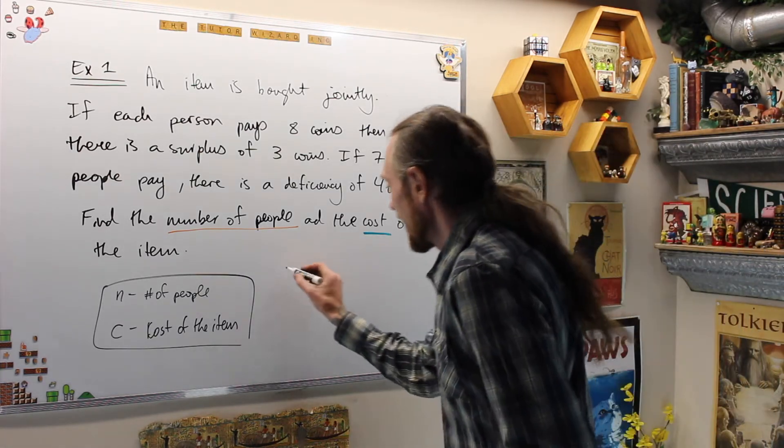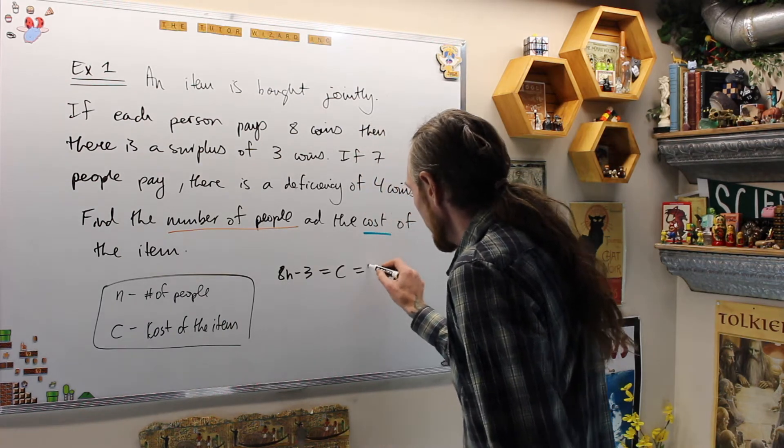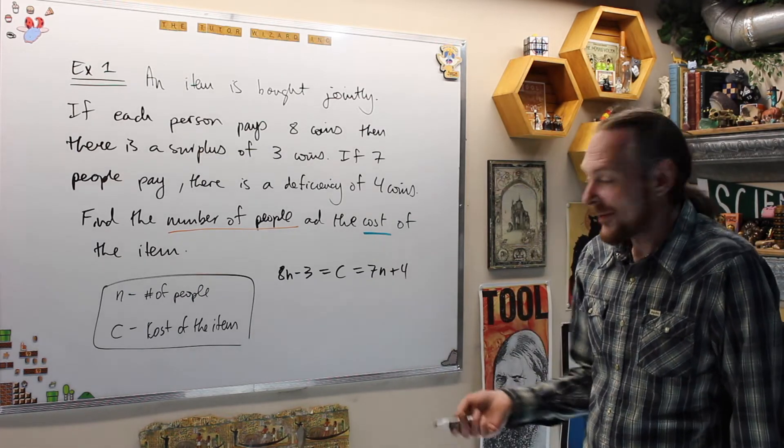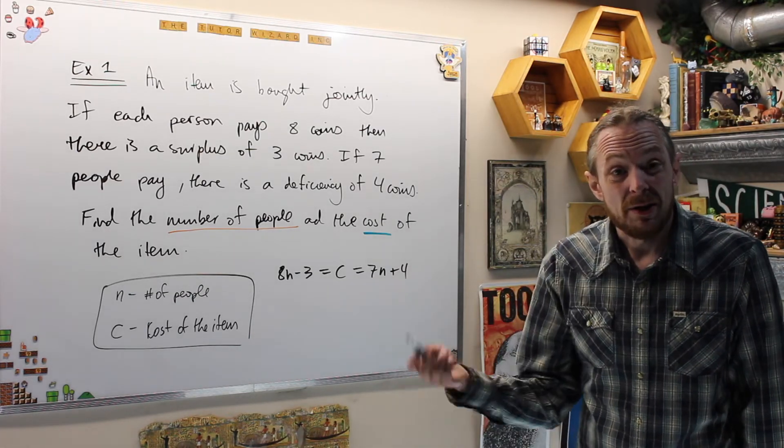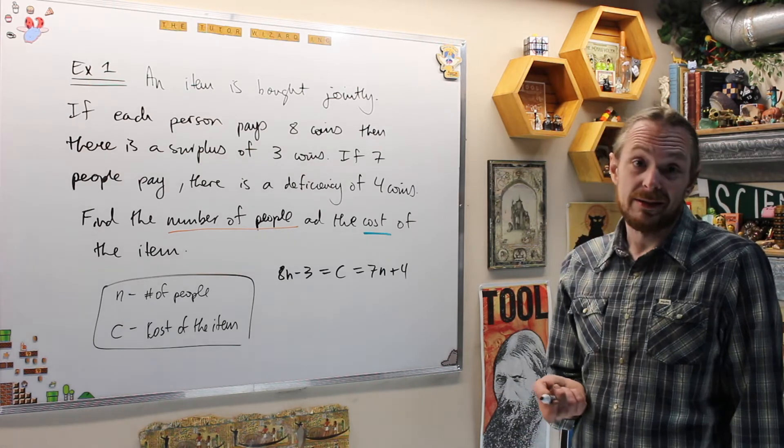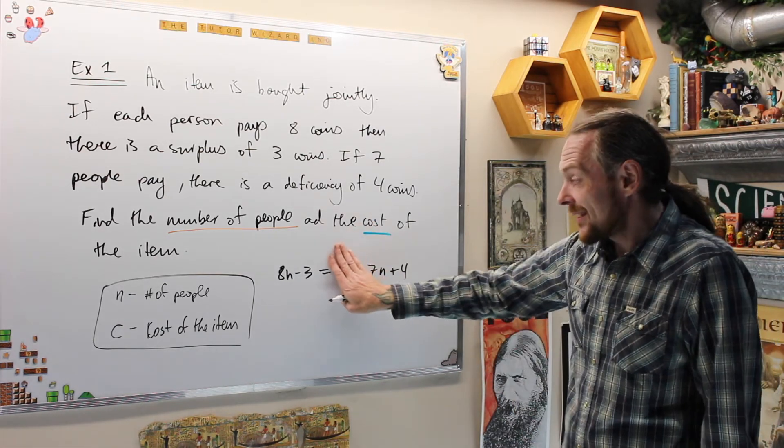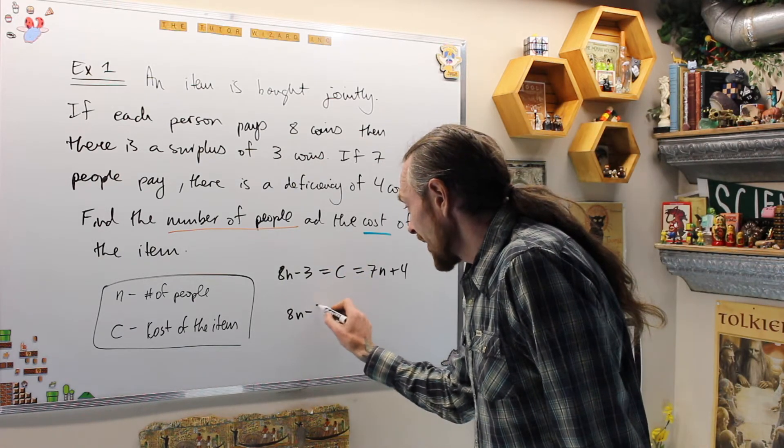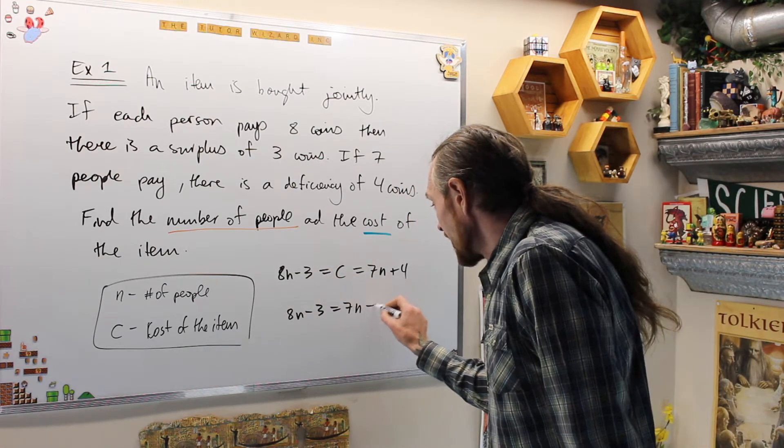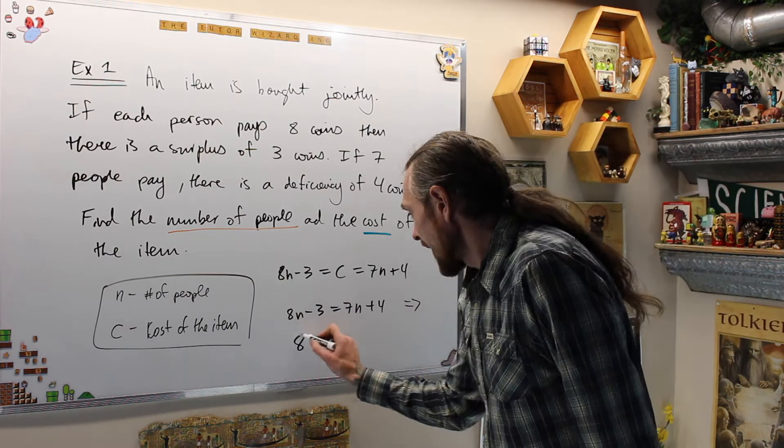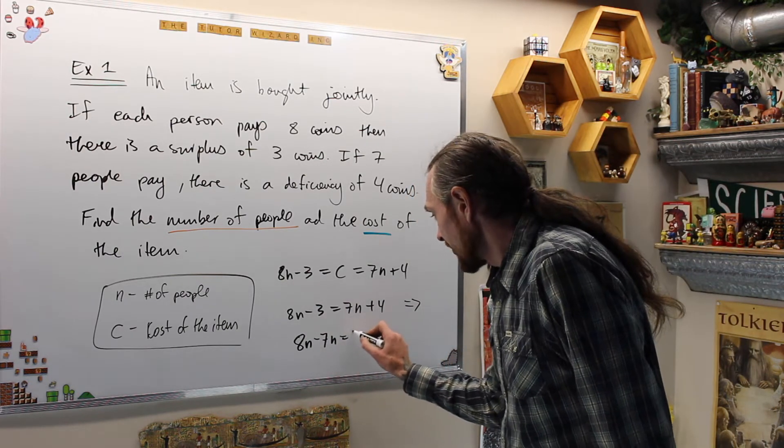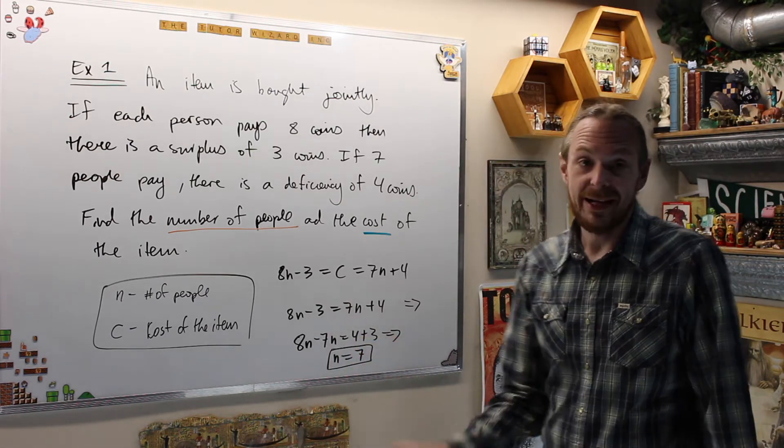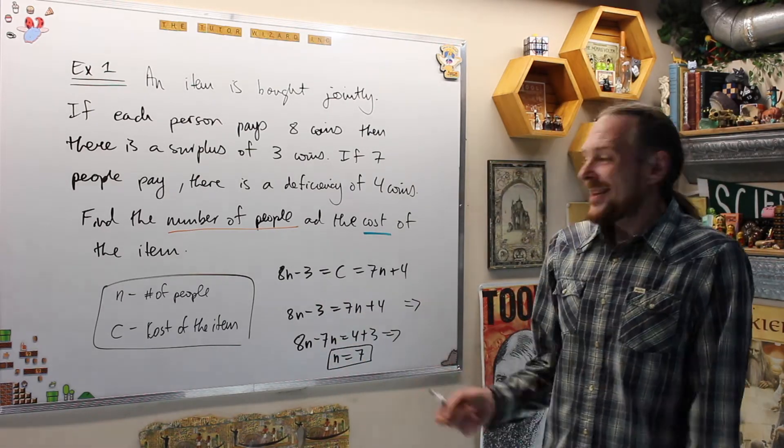If I now see that 8N minus 3 is equal to C, which is equal to 7N plus 4, I can now have, and this is the crux, everyone laughs at first, but now this will be one equation and one unknown, and that's what we're going to do to solve all linear systems. I'm even doing it right now. Cleverly doing this, I've eliminated C from the equations. I now have one equation and one unknown. This now says 8N minus 3 equals 7N plus 4. We're going to get 8N minus 7N equals 4 plus 3, which says N is equal to 7.